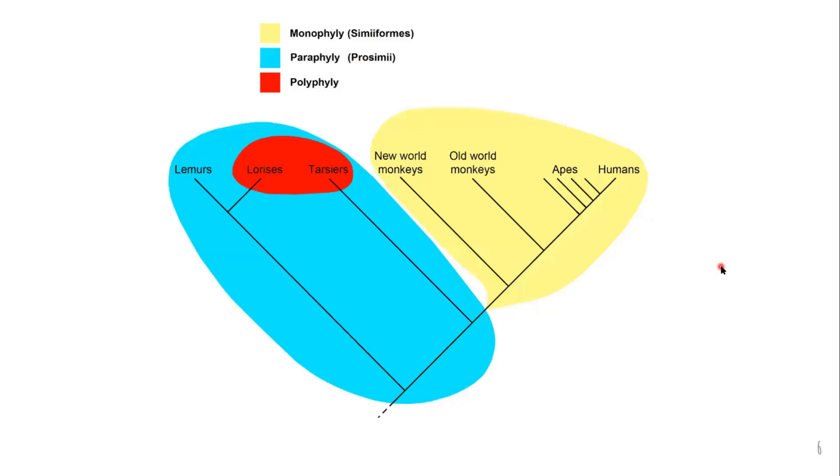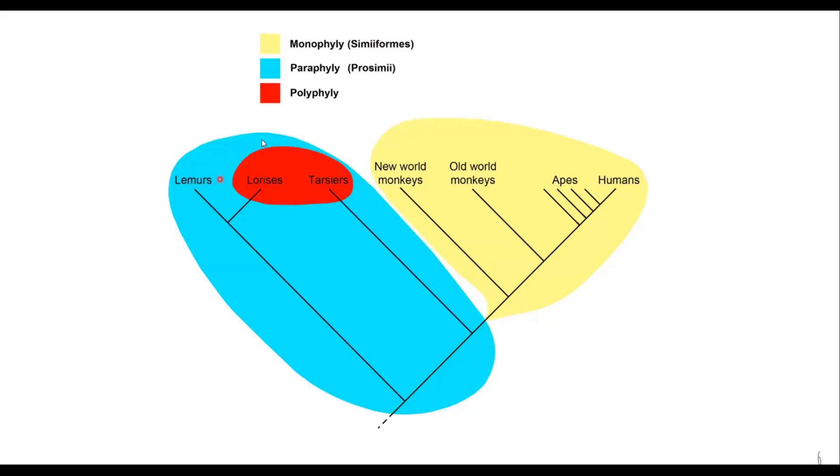Let's make this concept very clear in your head by using an example. So look right here. You have the blue one, yellow and red representing each type of clade.